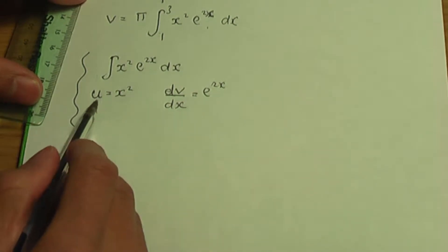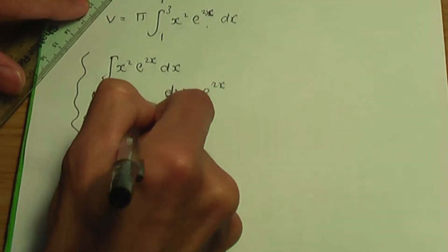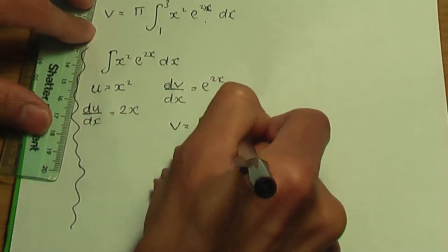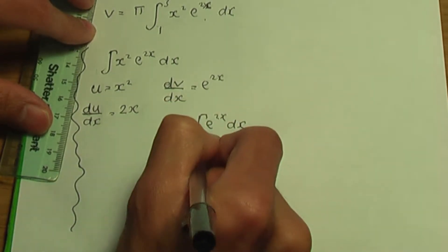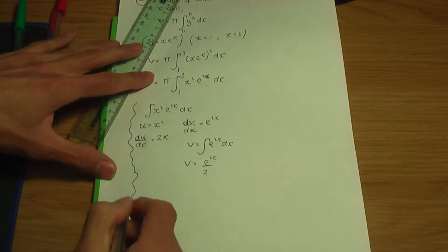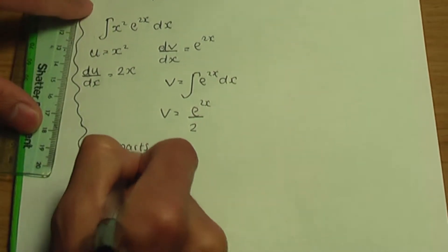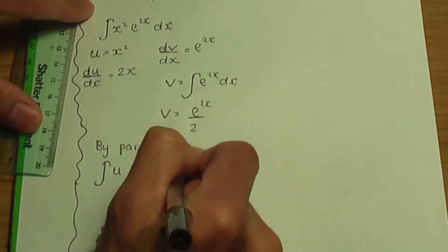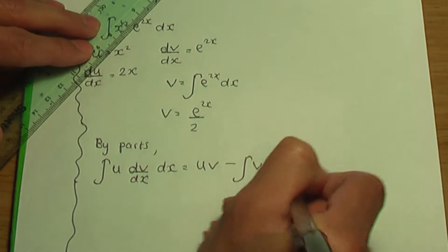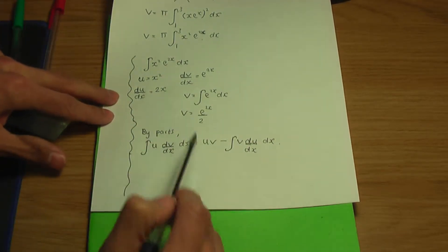For integration by parts, I take u to be x squared, so dv over dx is e to the power 2x. Then du over dx equals 2x by differentiation, and v equals e to the 2x divided by 2 by integrating e to the 2x. The integration by parts formula is: the integral of u dv/dx dx equals uv minus the integral of v du/dx dx.